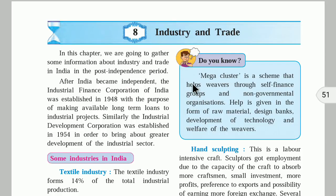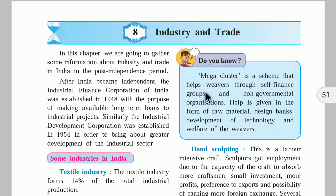Mega clusters is a scheme that helps weavers through self-finance groups and NGOs. Non-governmental organizations provide loans to weavers. Help is given in the form of raw materials, design banks, development of technology, and welfare of the weavers. Because of this, clusters have been formed in places like Surat and Ahmedabad, which are also major clusters of the textile industry.